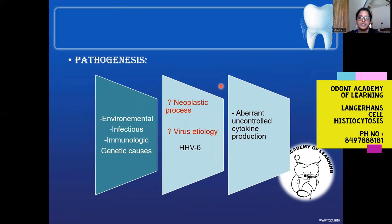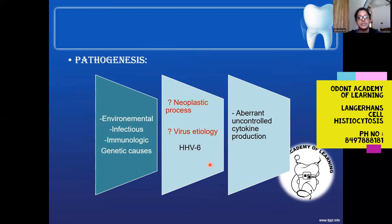There are numerous theories regarding the pathogenesis of this condition. It could be of environmental, infectious, immunological, or genetic origin. Some neoplastic process and viral etiology have been noted, including a prevalence with HHV-6. It could also be due to aberrant or uncontrolled cytokine production.